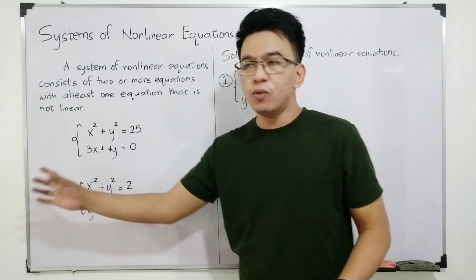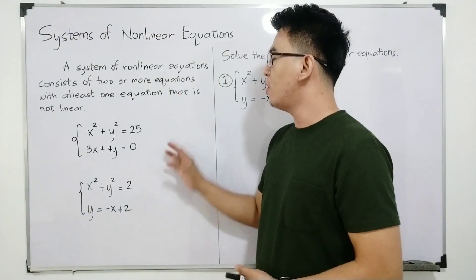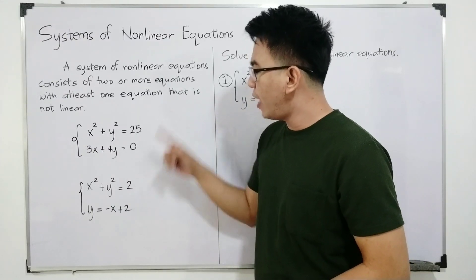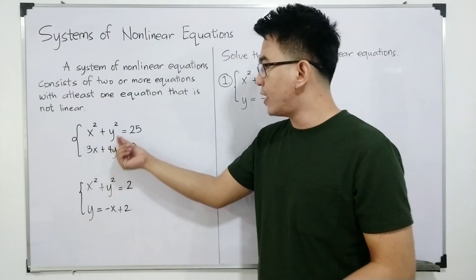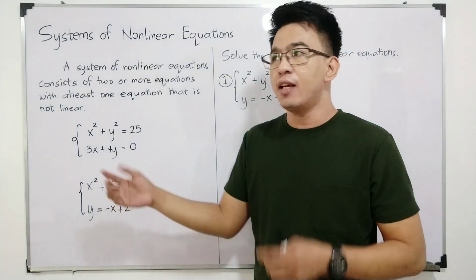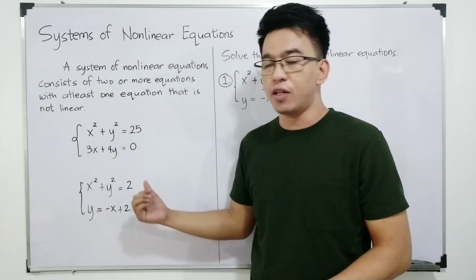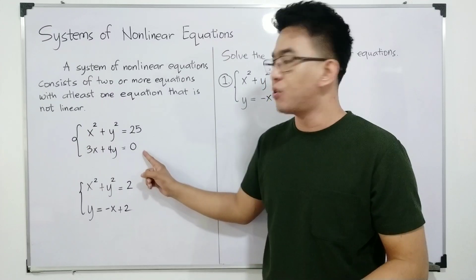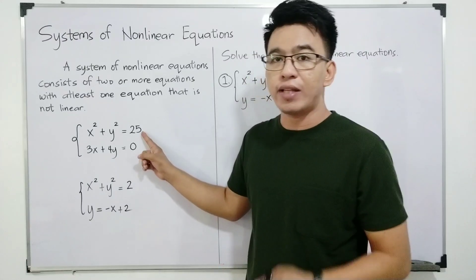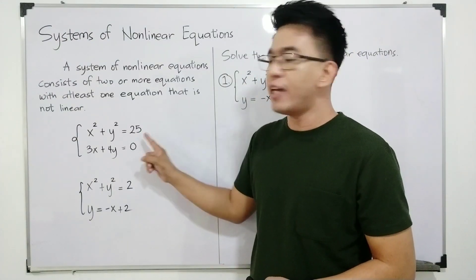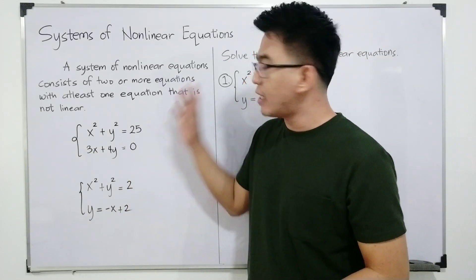I have here two given systems of non-linear equations that fit our definition. First, we have two equations. In the first example, we have x squared plus y squared is equal to 25, and the other equation that composes the system is 3x plus 4y is equal to 0. As you can see, this one is a linear equation, and the other is a non-linear equation, because this one is a quadratic equation. The degree of this equation is 2, that's why this one is a system of non-linear equations.